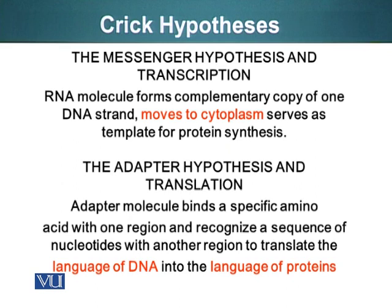He proposed that an RNA molecule forms a complementary copy of one of the DNA strands. This RNA physically then moves to the cytoplasm where it serves as the template, still in the form of the nucleotide sequence, which can then be translated into the language of amino acids. For the second question of how translation takes place, Dr. Crick proposed an adapter molecule that can bind a specific amino acid with one region and can recognize a sequence of nucleotides with another region, to translate the language of DNA into the language of proteins. So the adapter would have the ability to interact with amino acids — the basic building blocks of proteins — and another domain able to recognize a specific nucleotide sequence on the messenger RNA.